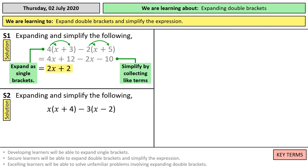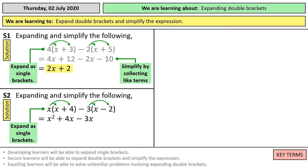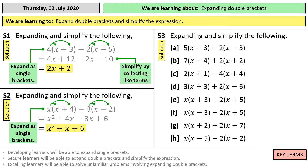Next question: expand and simplify the following. Similar to the question before, we're multiplying by a variable — this time x — on the first bracket. So we need to expand the single brackets. x times x is x squared, x times plus 4 is plus 4x, negative 3 times x is negative 3x, and negative 3 times negative 2 is positive 6. Then we collect our like terms, which is just those 2x terms in the middle, so we get x squared plus 1x plus 6.